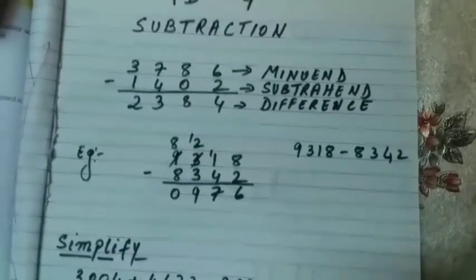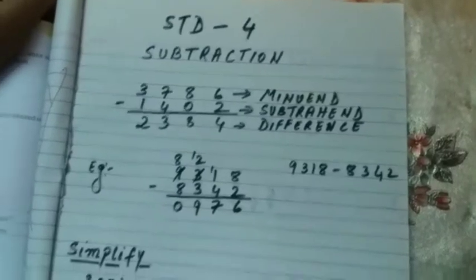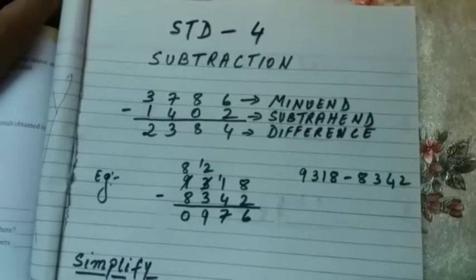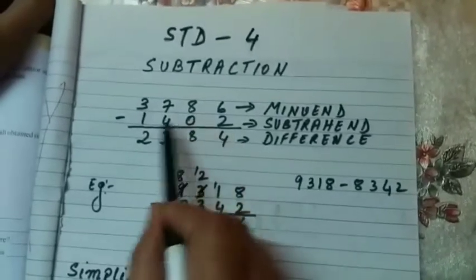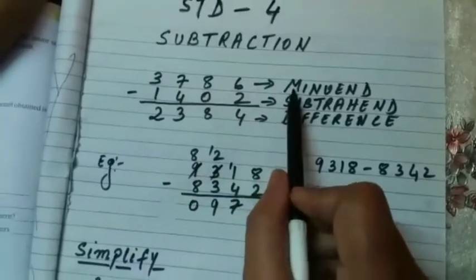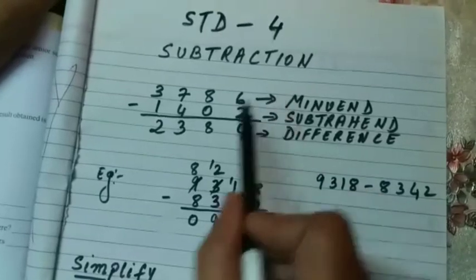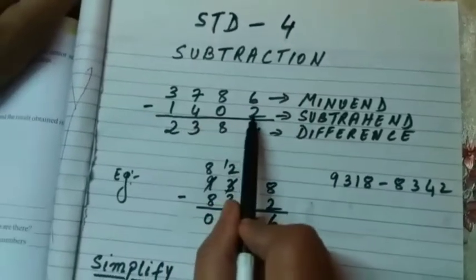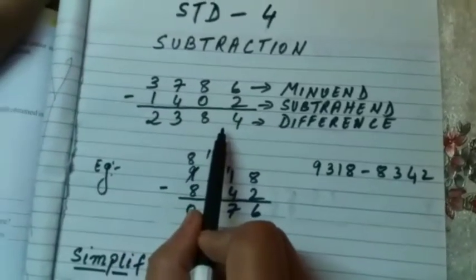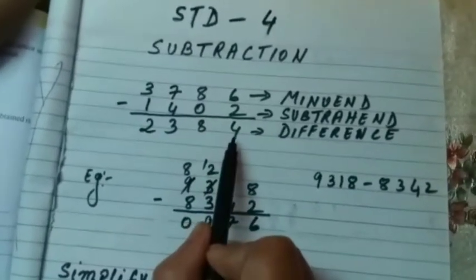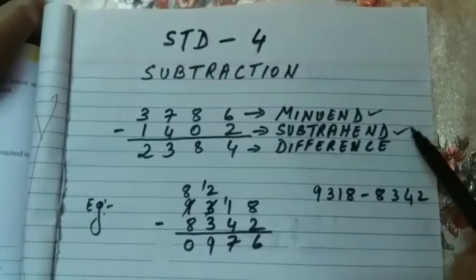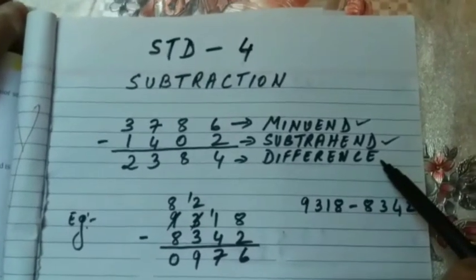Hello everyone, I am back again with one more chapter in mathematics — that is subtraction, and this is for standard 4. The bigger number from which we subtract the smaller number is called the minuend. The number which we subtract is called the subtrahend. The result we get after subtraction is called the difference.